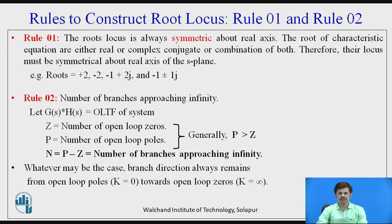Rule 2: From this we can know the number of branches which are going to approach infinity. From the given open loop transfer function G(s)H(s), we can find the number of zeros and number of poles. Whatever is present in the numerator represents zeros and whatever is present in the denominator represents poles. Z represents the number of open loop zeros whereas P represents the number of open loop poles. Generally the value of P is greater than Z, so N = P minus Z represents the number of branches approaching infinity. The branch direction always goes from open loop poles where K equals 0 towards open loop zeros where K tends to infinity.